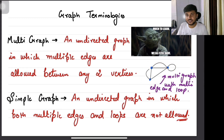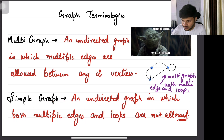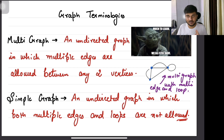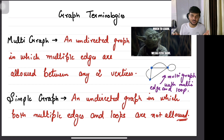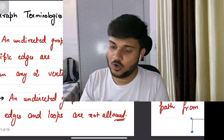Just the opposite of it is a simple graph. What is a simple graph? It's an undirected graph in which both multiple edges and loops are not allowed. Simple graphs are plain undirected graphs — two vertices are going to have only one edge, and self-loops are not allowed. Whereas in a multi-graph, there can be multiple edges and self-loops.